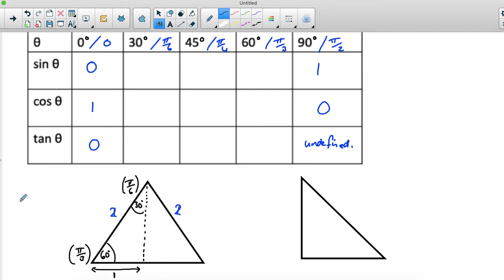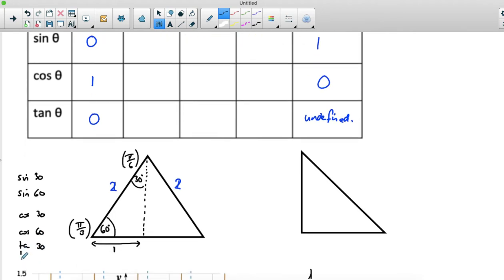Now from here we can get really easily sine of 30, sine of 60, cos of 30, cos of 60, tan of 30, and tan of 60. Because sine of 30 is the opposite over the hypotenuse, so sine of 30 is a half. Sine of 60 is the opposite over the hypotenuse. We need to know what this length is here.